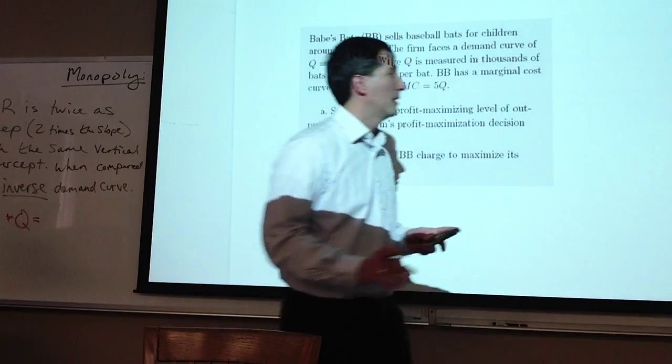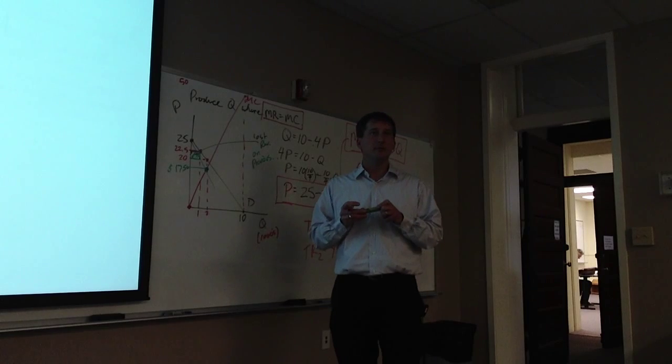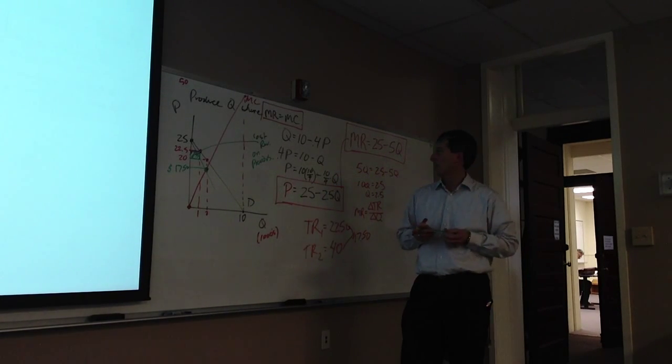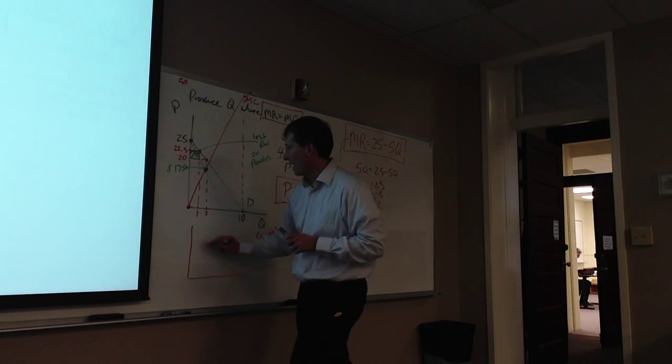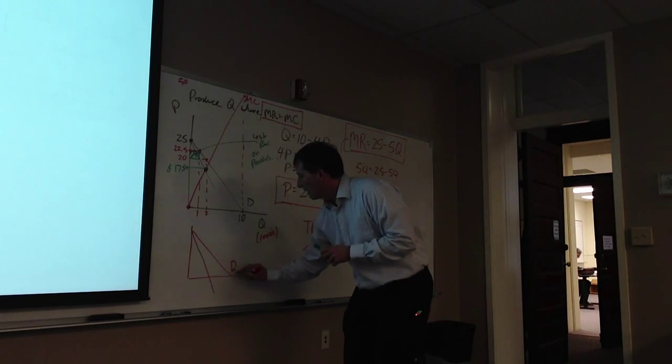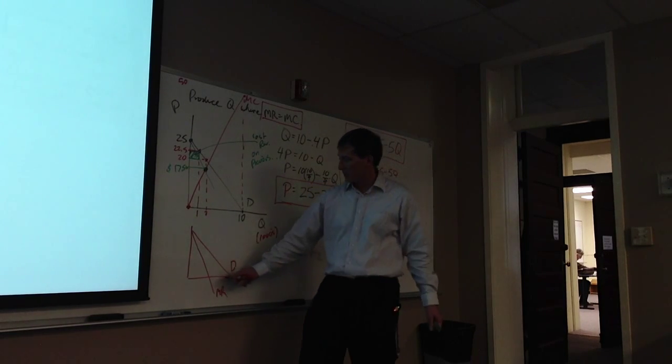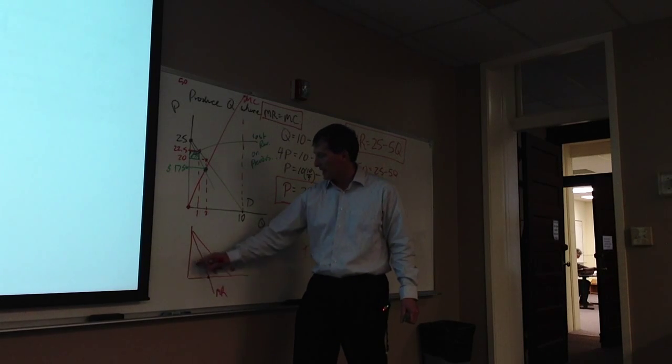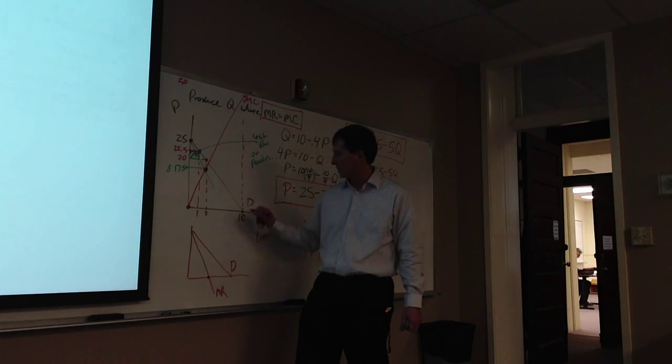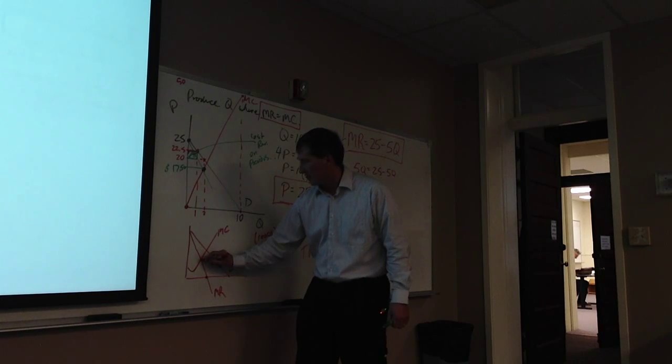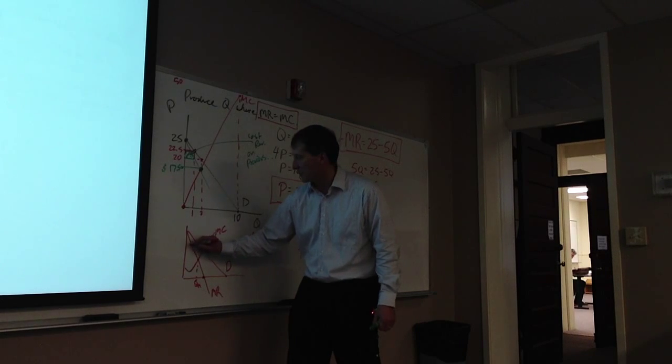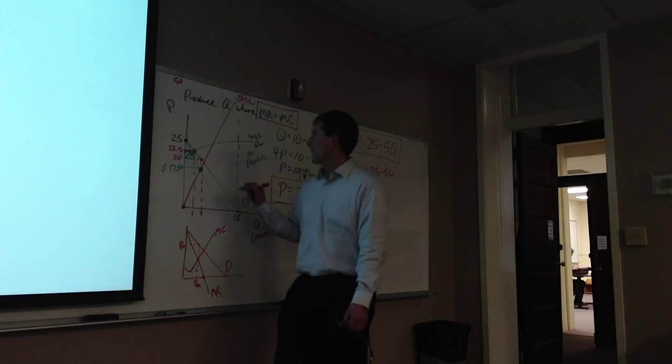What price should they charge? 18.75. How did you get that? Into the inverse demand curve, right? So you're not going where the two lines cross. We're going to charge the highest price people are willing and able to pay for it. Produce the quantity where the revenue generated by the last unit equals the cost of the last unit. Charge the highest price people are willing and able to pay.